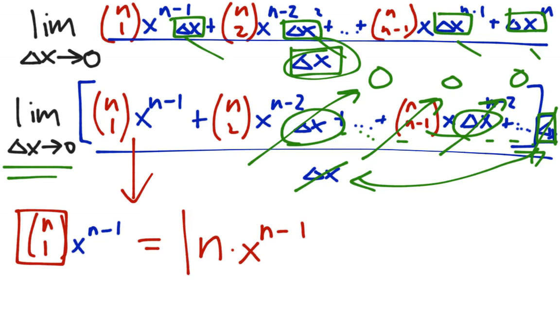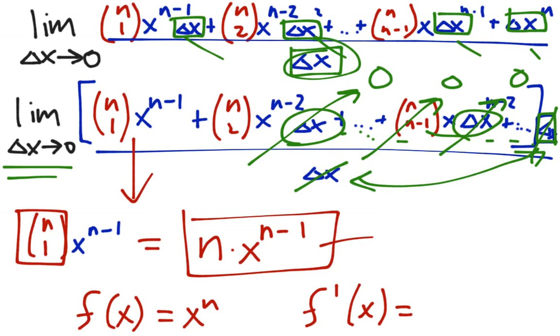which is what? Yes. It's the power rule. Look at that. We did it. We started with f of x was x to the n, and we ended up with f prime of x equals that. Bring down the power,